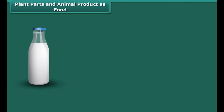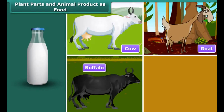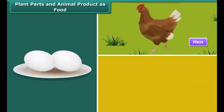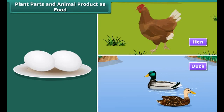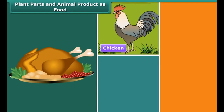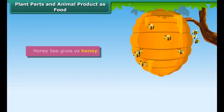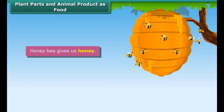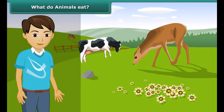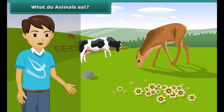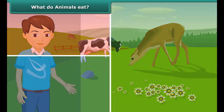There are three types of animals on the basis of the nature of food they eat. They are herbivore, carnivore and omnivore. Herbivores are those animals which eat only plants — for example, cow, buffalo, goat, elephant, etc. Carnivores are those animals which eat only other animals — for example, lion, tiger, jaguar, jackal, etc.